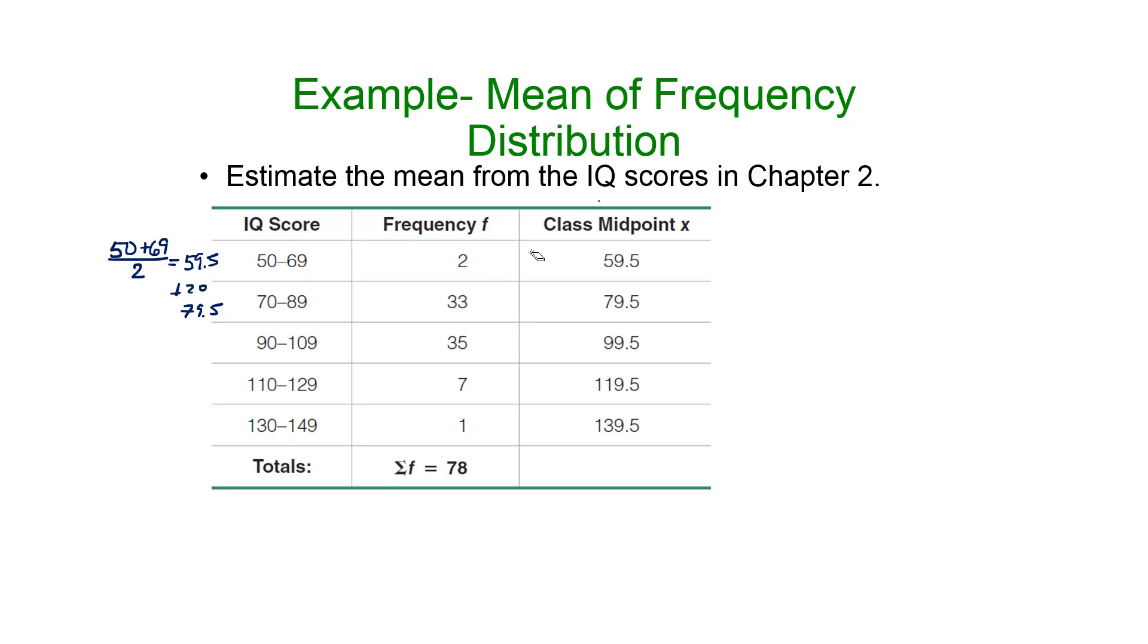We don't actually know. It could have been two data values of 50 or a data value of 50 and a data value of 68. But we have to do the best we can with the information we have. We use the midpoint to represent the class.